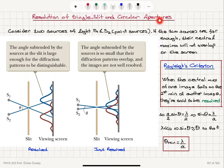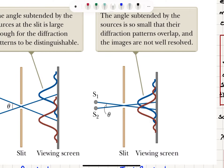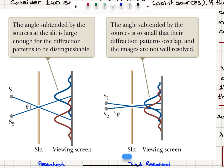Resolution of single slit and circular apertures. Consider two sources of light, S1 and S2, point sources. If the two sources are far enough, their central maxima will not overlap on the screen. There is an angle theta subtended by these sources, and these sources will each have a diffraction pattern on the screen due to single slit diffraction.